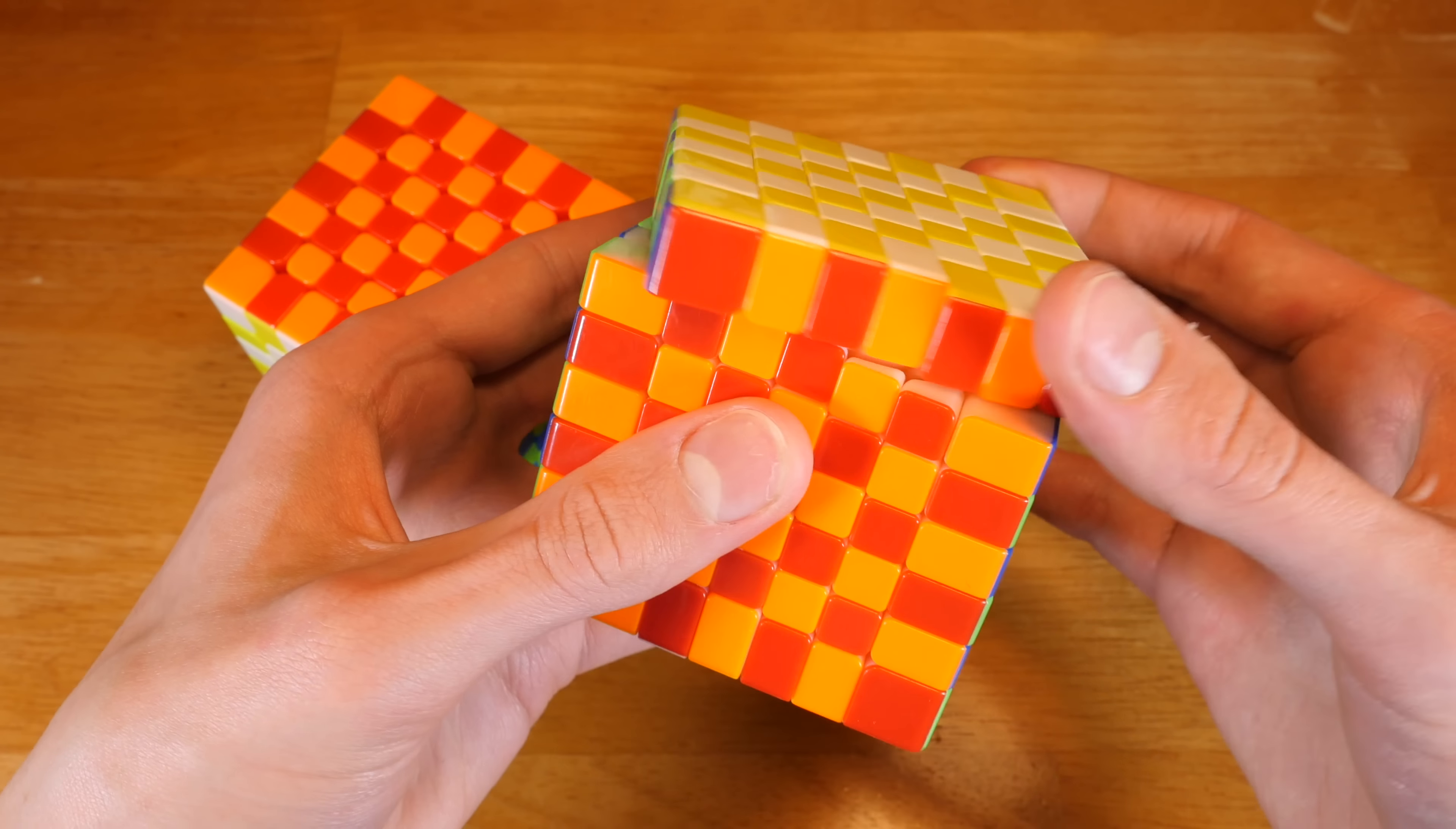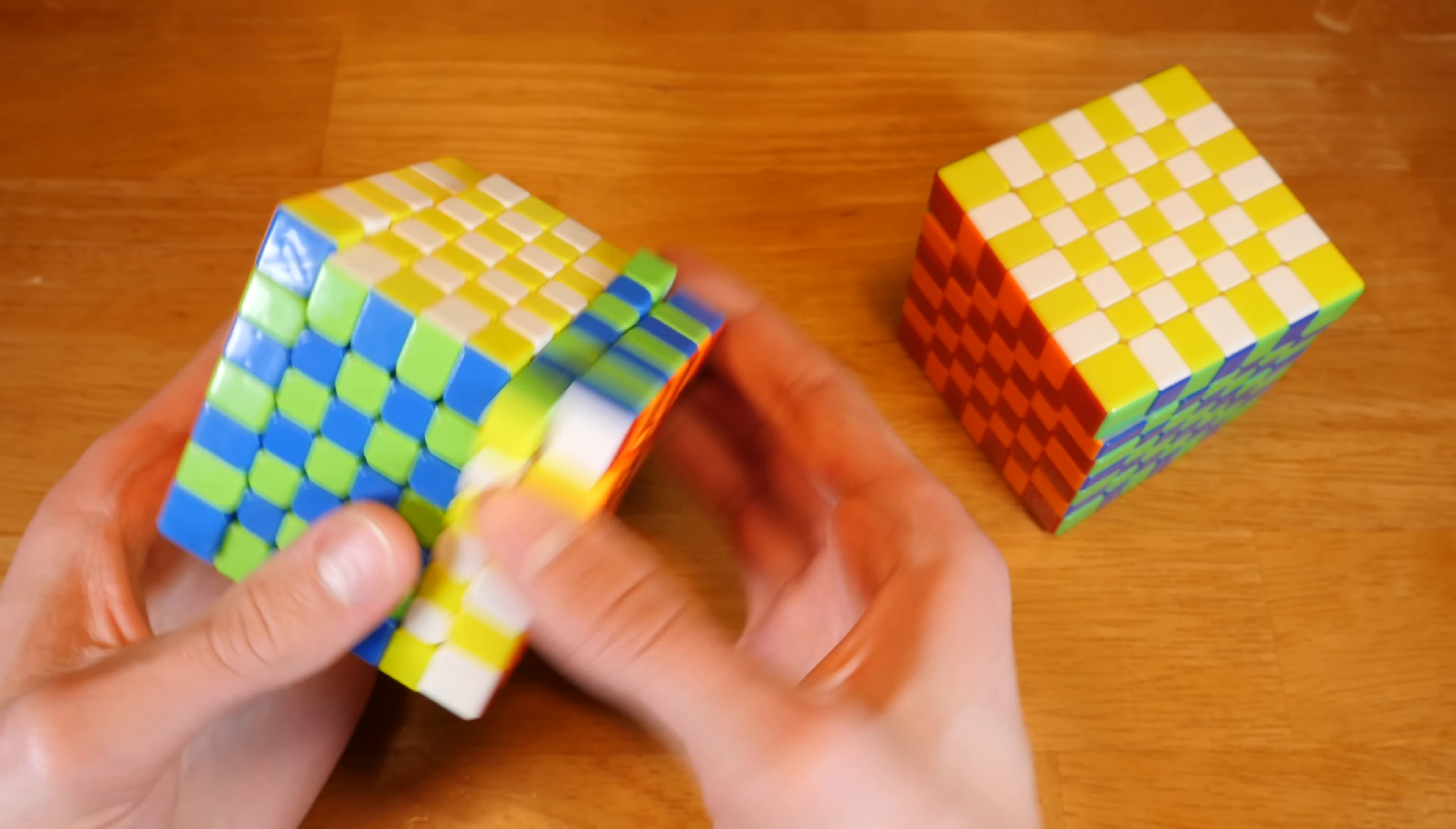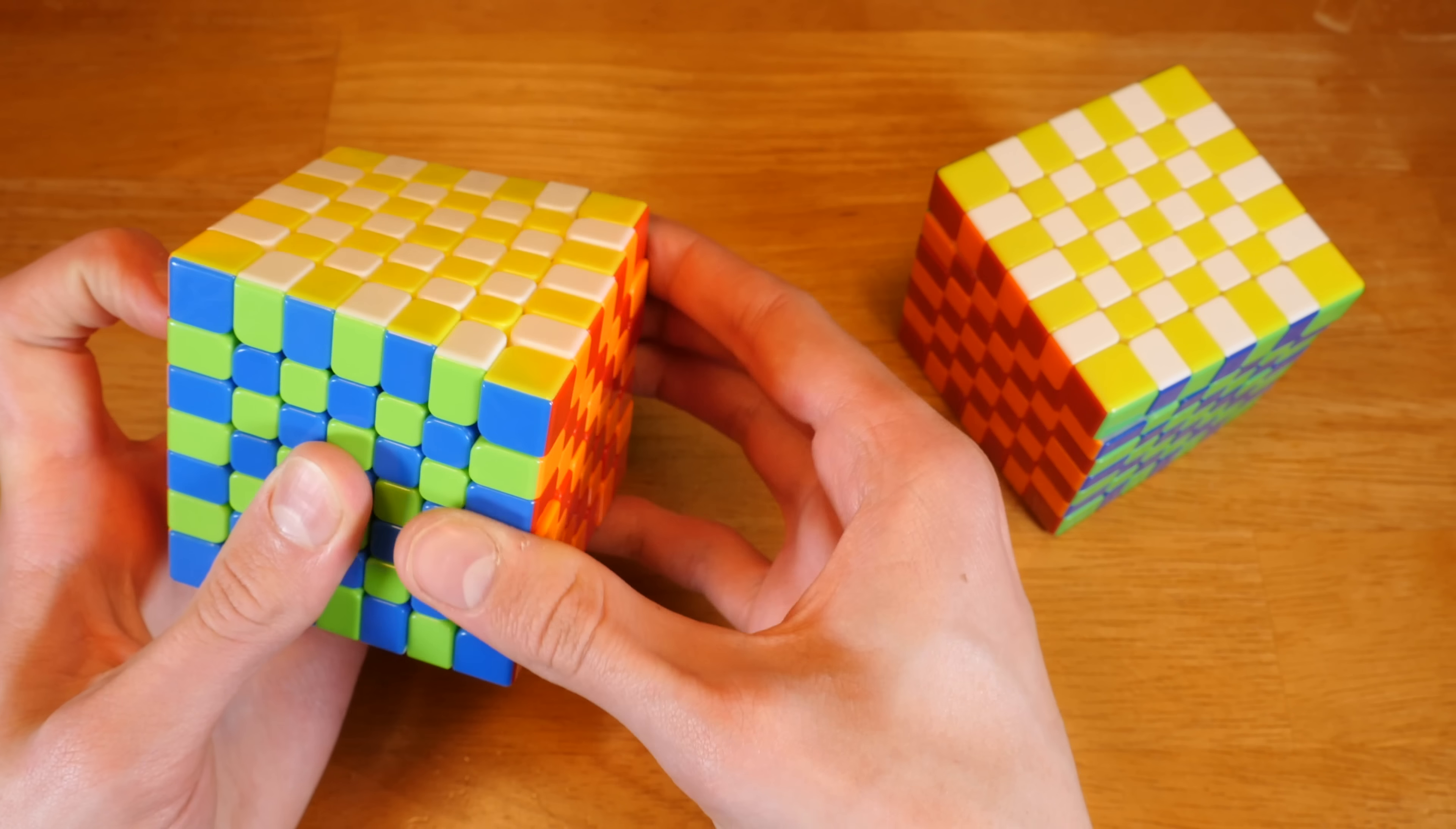So the corner cutting is definitely more effortless on the Yuxin, but I do believe the ChiChi has more functional corner cutting with that added reverse. With the addition of those holes, it is very slight, but it does reduce lockups and catches.